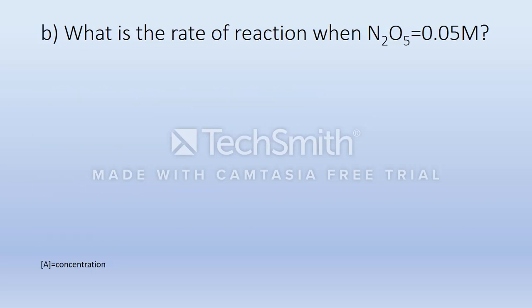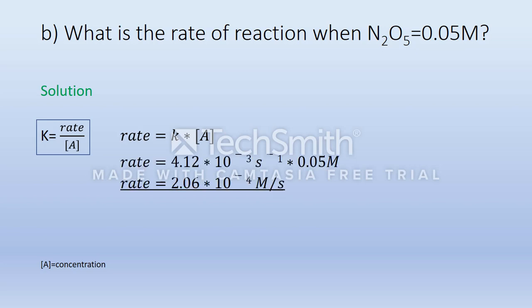Next part is B. What is the rate of reaction when N₂O₅ is 0.05 mol? For this task we need one basic formula. Convert it to rate equals k multiplied with [A]. And if we set in the numbers and solve the formula, we come to the result that the rate is 2.06 × 10⁻⁴ mol per second.